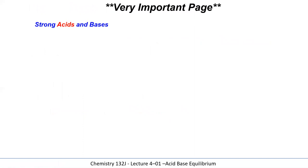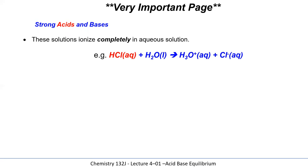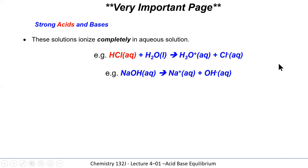This is a particularly important section worth committing to memory. Strong acids are not involved in equilibria — they are one-way reactions that go to completion; every molecule dissociates. An example is hydrogen chloride gas dissolving in water: every single HCl in solution forms hydronium and chloride ions — no HCl molecules remain. Similarly, sodium hydroxide aqueous does not exist as molecules; it exists completely as sodium ions and hydroxide ions.